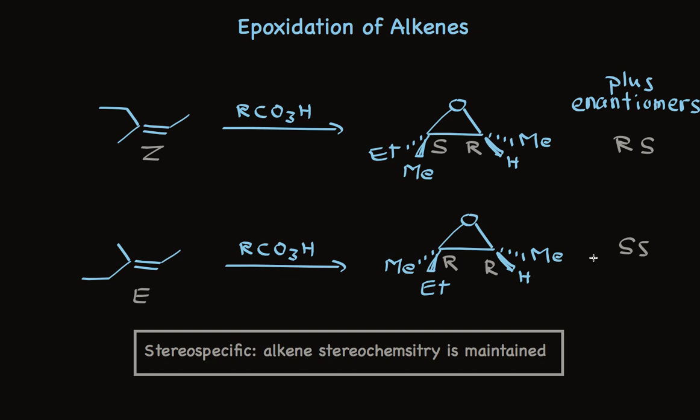The fact remains that of four possibilities, only two stereoisomers are formed, which means the reaction is stereospecific. When we want epoxides having a certain stereochemistry, we'll have to pay particular attention that we start with the right alkene.